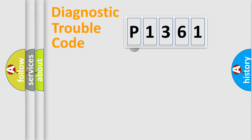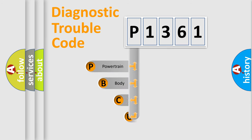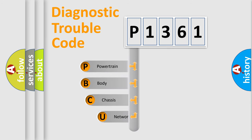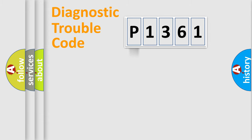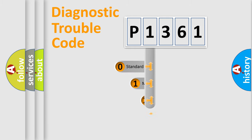First, let's look at the history of diagnostic fault code composition according to the OBD2 protocol. We divide the electric system of automobile into four basic units: powertrain, body, chassis, and network. This distribution is defined in the first character of the code.